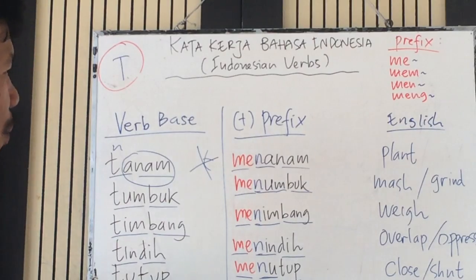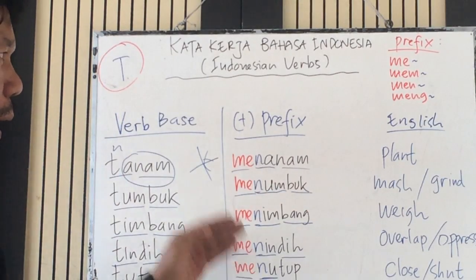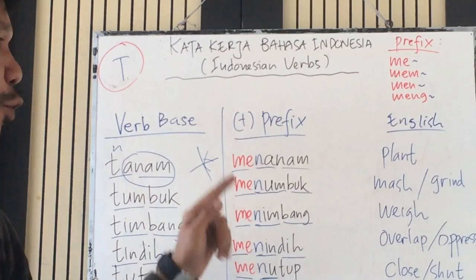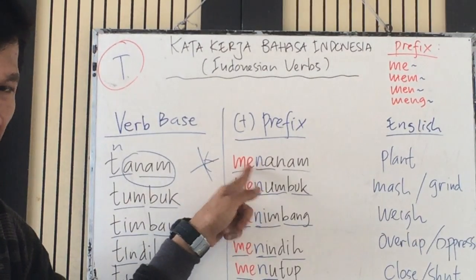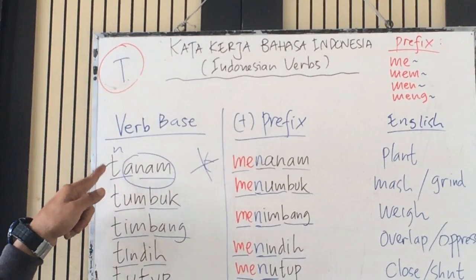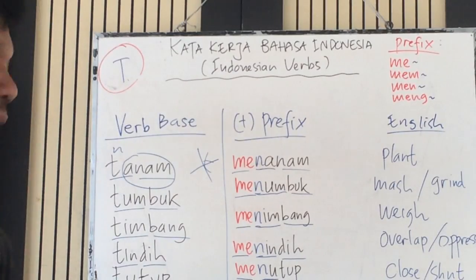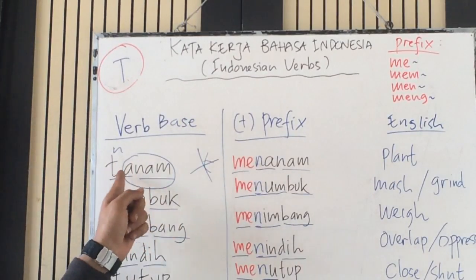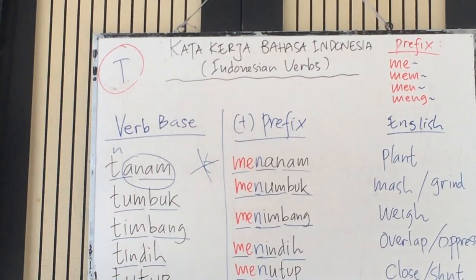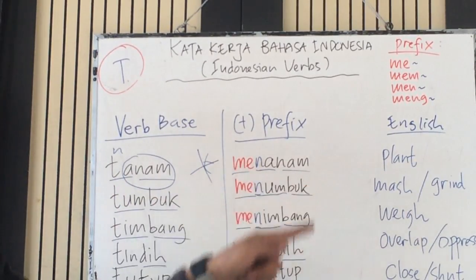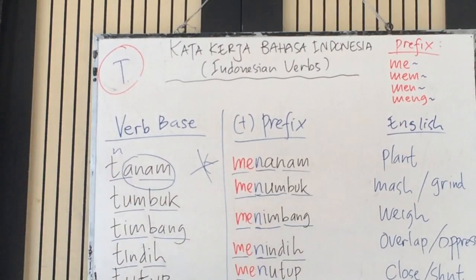That's all my explanation about the verb base with the first letter 'T'. To make it a transitive verb, we put the prefix 'ME' added by 'N'. The 'N' is the replacement of 'T'. So this becomes 'MENANAM', not 'METANAM' — 'T' is replaced by 'N', followed by the vowels A, U, I, I, U. So 'N' is the replacement from 'T'. I'll see you next week with another topic. Goodbye!